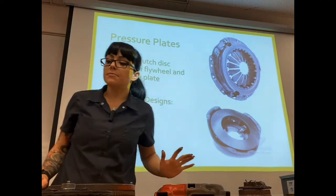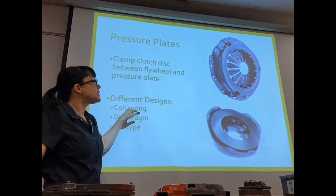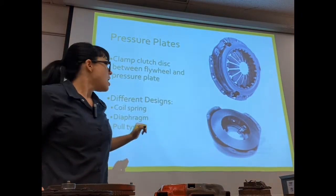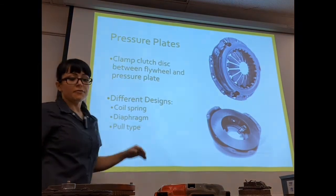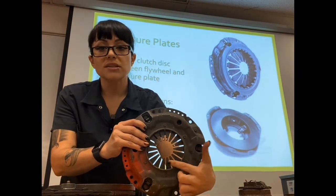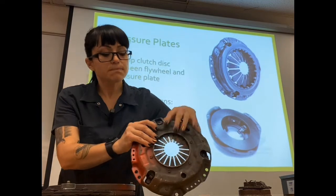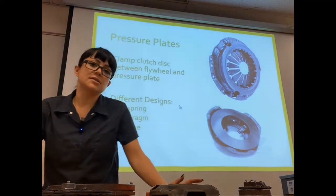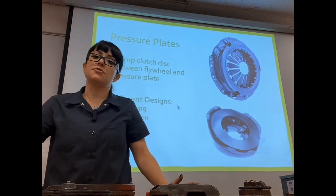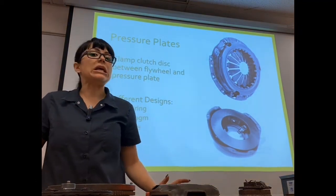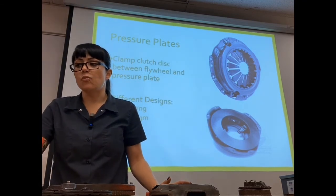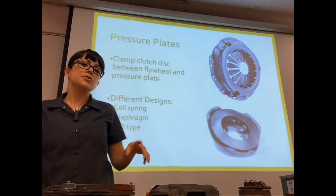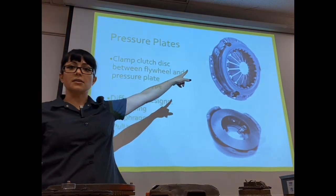There are three different types of pressure plate springs. There's a coil spring design shown in the bottom picture. There is a diaphragm type, which is the little fingers design I just showed you. And then there's a pull type, which is similar to a diaphragm but operates in the opposite direction. The Mitsubishi Evo is one vehicle that uses that pull-type design, but the majority of vehicles use a diaphragm design.